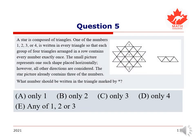Here is our fifth question. A star is composed of triangles. One of the numbers, 1, 2, 3, or 4, is written in every triangle so that each group of four triangles arranged in a row contains every number exactly once. This small picture represents one such shape placed horizontally. However, all other directions are considered. The star picture already contains three of the numbers.